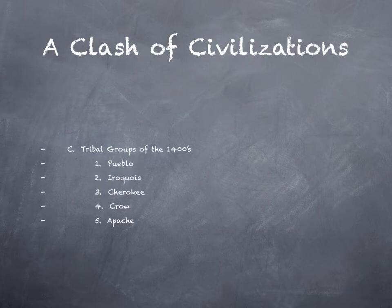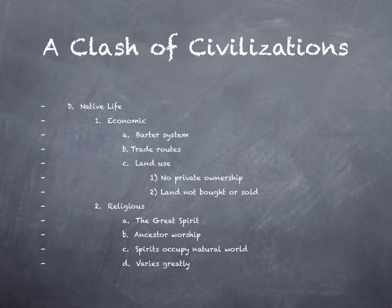The tribal groups that were dominant at the time of the arrival of the Europeans included the Pueblo in the southwestern United States, the Iroquois in the Midwest and the Northeast, the Cherokee in the Southeast, and then the Crow in the Great Plains, and the Apache also in the southwest and in the west. These were some of the more prominent tribal groups of Native Americans in North America.